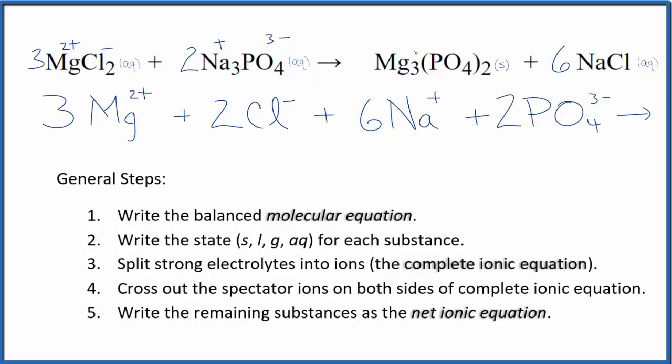For the products with net ionic equations, we don't split apart solids. So this Mg3(PO4)2, that's a precipitate, it's a solid. We're not going to split that apart.